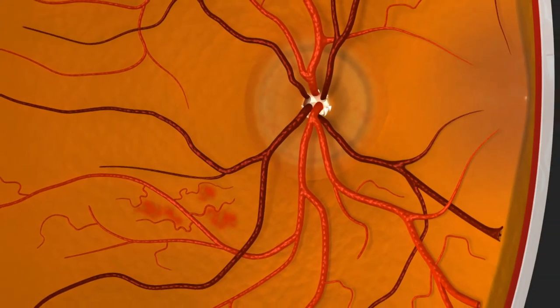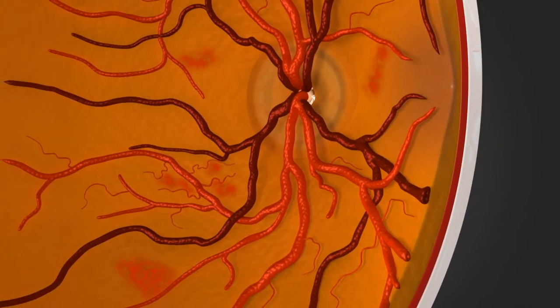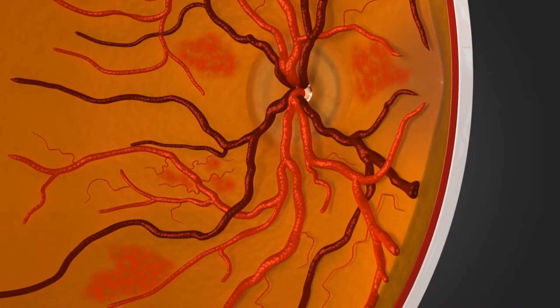In its early stages, a vein occlusion can cause the vessels in the back of the eye to become dilated and tortuous as the pressure increases in the blocked vein.